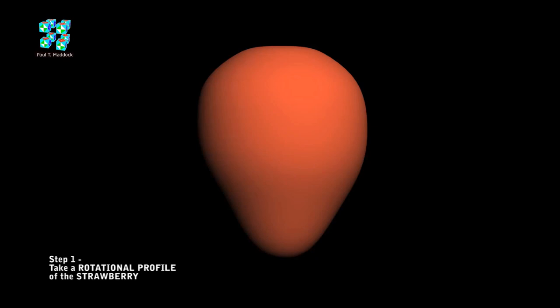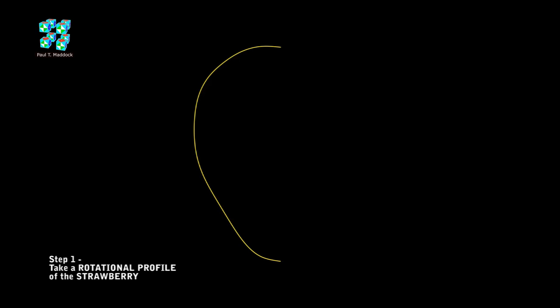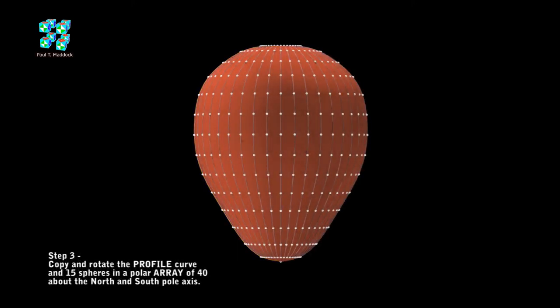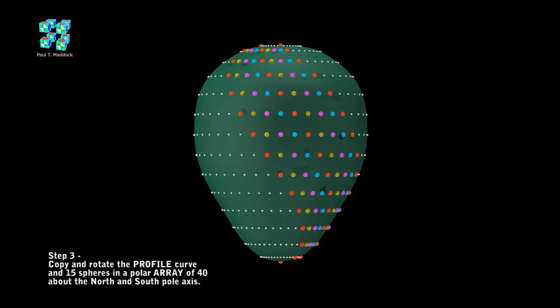Let's have a look at the strawberry. So our first job is to do a rotational profile. Now I'm going to divide this into 15 sections. And the 15 came again from hopscotching between coincidences. Now I'm going to give it a 40 array, the same as the pineapple. Now for this next step, I'm going to change the strawberry color to green, because I want to show up the colors.